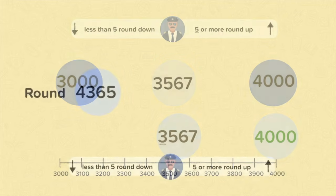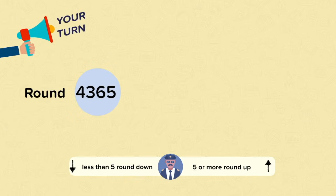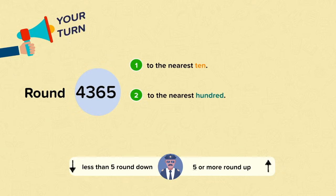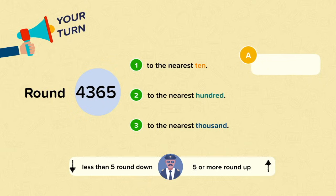Your turn now. Can you round 4365 first to the nearest ten, then to the nearest hundred, and then to the nearest thousand? Pause the video and have a go. Well done if when you were rounding to the nearest ten, you looked at the tens column, moved one space to the right and applied the rounding rule. You should have rounded up to 4370.